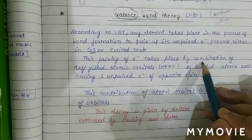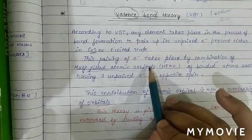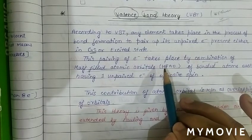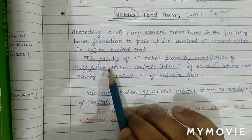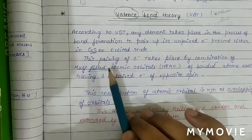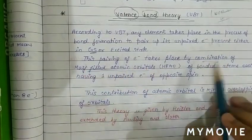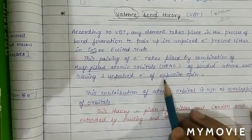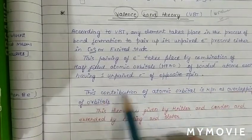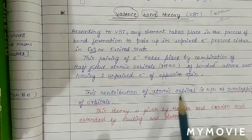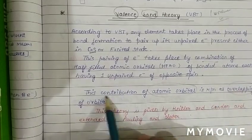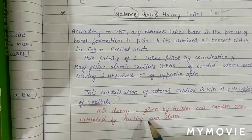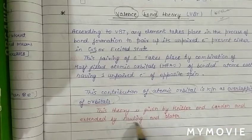This pairing of electrons takes place by the combination of half-filled atomic orbitals. Each bonded atom has one unpaired electron in a half-filled orbital, and the spin of the electrons must be opposite. This contribution of atomic orbitals in bond formation is known as overlapping of orbitals. This theory was given by Heitler and London, and extended by Pauling and Slater.